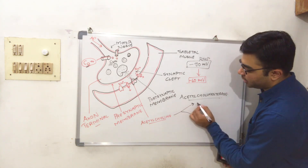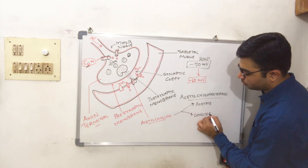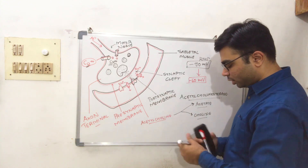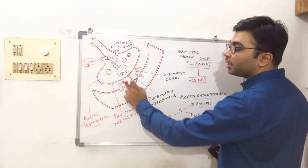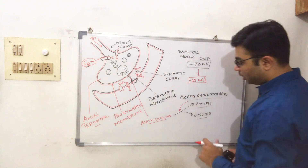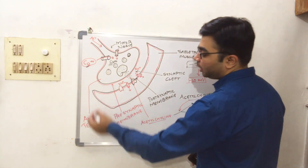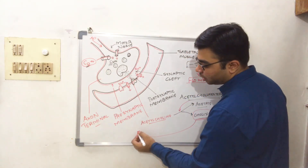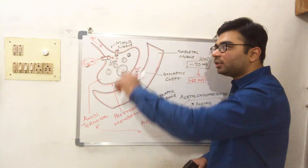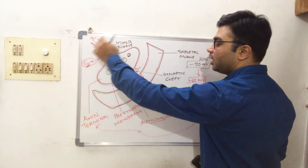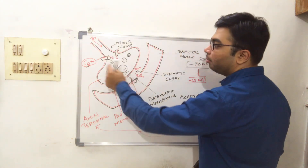Acetylcholinesterase degrades acetylcholine into two portions: acetate and choline. The choline substance is then reuptaken from the synaptic cleft back into the axon terminal, where it is used in the formation of new acetylcholine. When a new action potential arrives, new acetylcholine is formed, vesicles burst again due to entry of calcium ions, and this process continues.